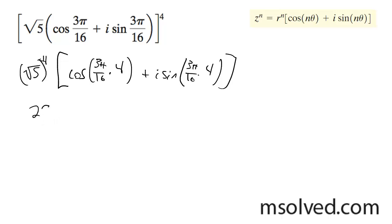So I'm going to get out 25 times the cosine of 3π over 16 times 4 is 12π over 16, which reduces down to 3π over 4.